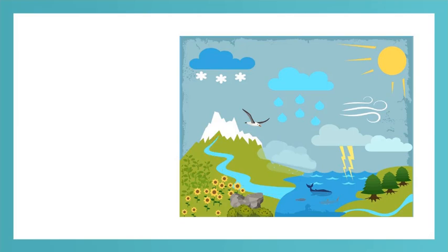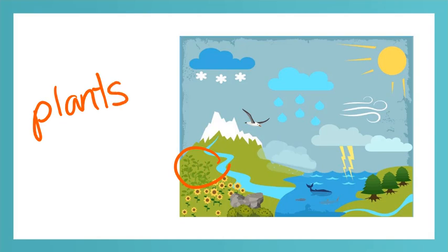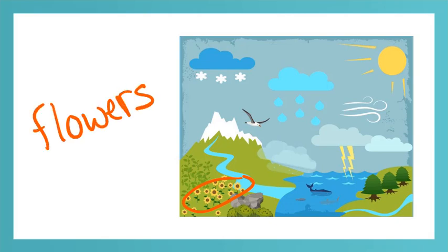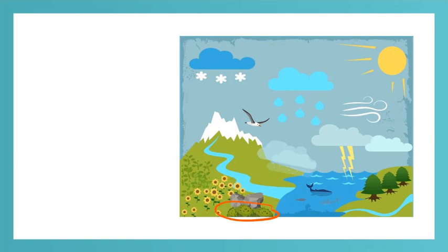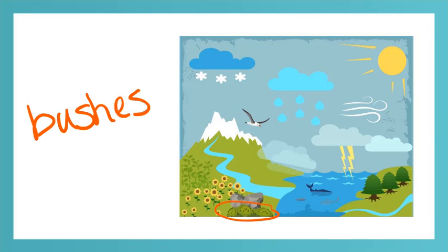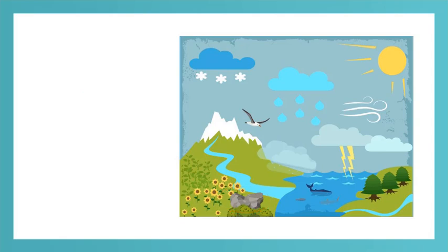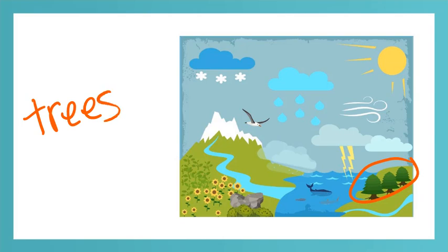What do we have next to the river? We have plants. P-L-A-N-T-S. Plants. And this kind of plant here is flowers. F-L-O-W-E-R-S. Flowers. And what about this plant down here? Did you say bushes? B-U-S-H-E-S. Bushes. Then what are the bushes in front of? Those are in front of rocks. R-O-C-K-S. Rocks. And we have more plants over here. These are trees. T-R-E-E-S. Trees.